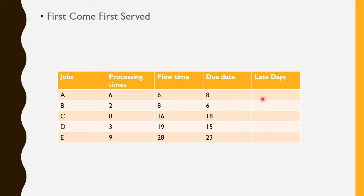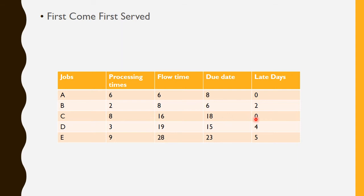Now for Late Days: A finishes by day 6 and the due date is day 8, so late days = 0. B finishes by day 8 but the due date is day 6, so late days = 8 − 6 = 2. C finishes by day 16 with a due date of 18, so late days = 0. D finishes by day 19 but due date is 15, so late days = 4. E finishes by day 28 with a due date of 23, so late days = 5.